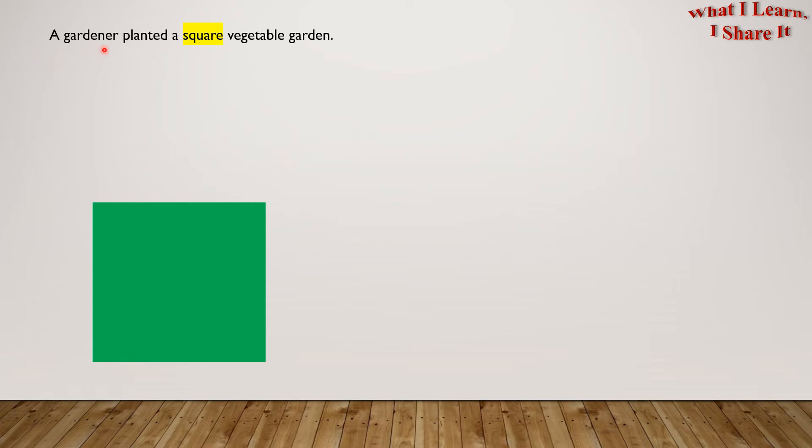A gardener planted a square vegetable garden. This is a square vegetable garden. He used one-half of the garden for tomatoes. This is half of his garden, and it is planted with tomatoes.